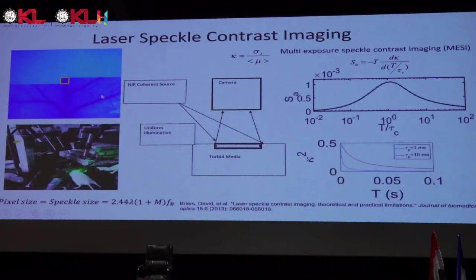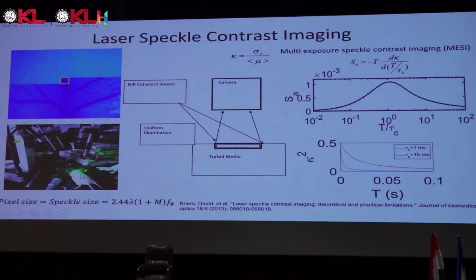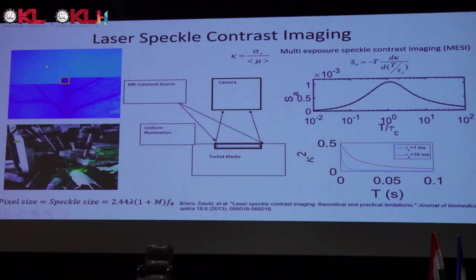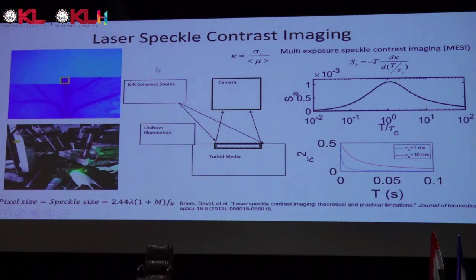Here you can see a simple experiment: imaging of a mouse brain. We remove the scalp and skull, shine the laser, and measure the scattered data using a camera. The image from the camera looks very noisy, but the moment you compute what is called the speckle contrast, it starts revealing the perfusion map. This is called laser speckle contrast imaging, which gives you the perfusion map in the superficial region.